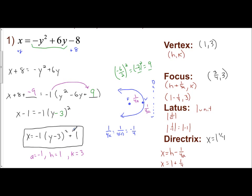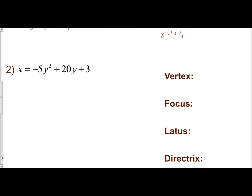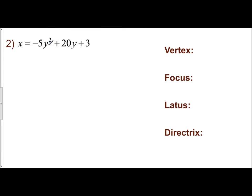For Example 2, we complete the square to get into standard form. I subtract 3 to isolate the quadratic and linear terms, giving x minus 3 on the left. I cannot complete the square with a leading coefficient that is not 1, so I factor out negative 5. That gives negative 5 in parentheses with y squared and negative 4y. I combined the isolating step and the factoring step into one to get a leading coefficient of 1 inside the parentheses.